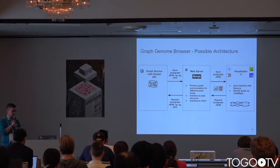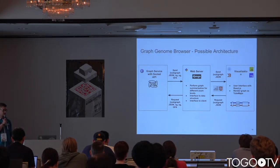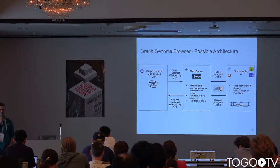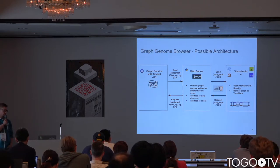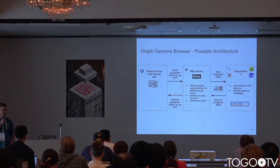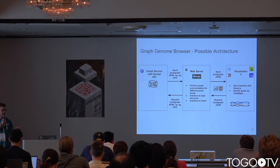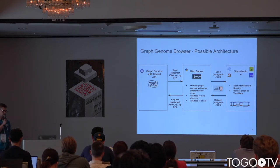Here is a proposal for the possible architecture of our graph genome browser. On the back-end we use VG, potentially extending VG to provide a graph service socket API, which we can access from our Django back-end web server. The web server performs graph summarization for different zooming levels, serves as an interface to the data structure, and communicates with the client via WebSockets. The visualization is executed via tube maps and the user interface is implemented with React.js.